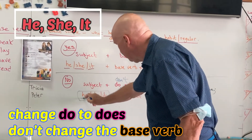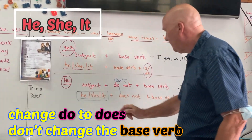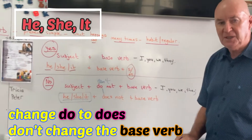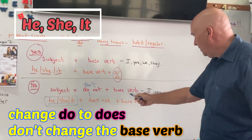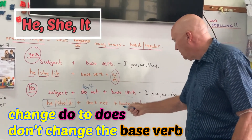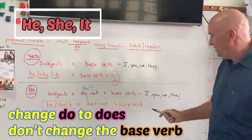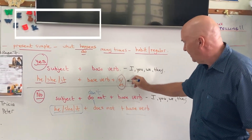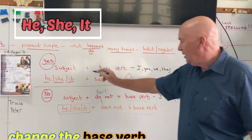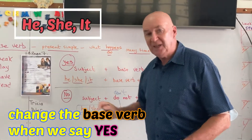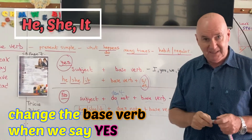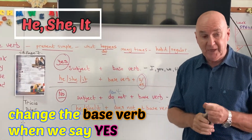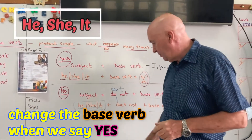Notice that when we say no, the change is 'do' to 'does' if the subject is he or she. We don't change the base verb — we only change the base verb when we say yes. That's quite difficult to remember.